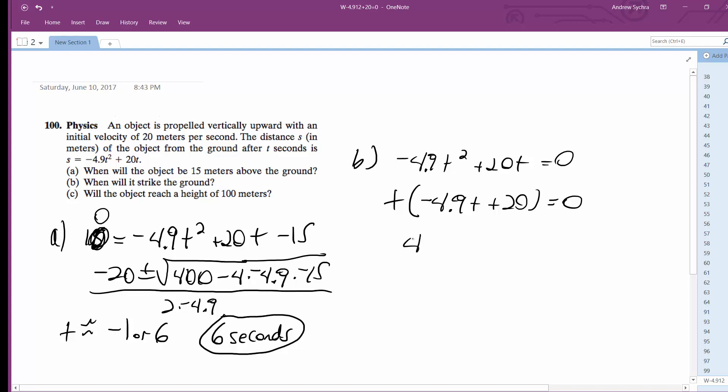So 4.9 T is equal to 20 divided by 4.9. T is going to be equal to roughly 4.08 seconds.